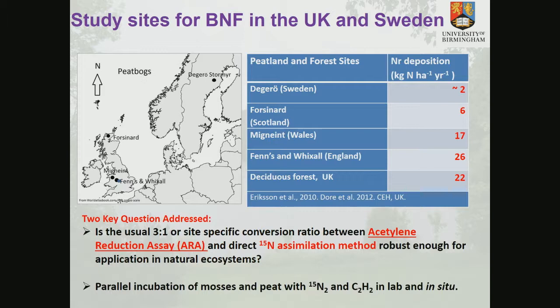For biological nitrogen fixation, we looked at the gradient of nitrogen depositions from Degaro in Sweden — the northern limits of PT systems with background atmospheric deposition — to higher deposition within the UK. The usual method, the acetylene reduction assay, has been used extensively, so we wanted to know if it's applicable across this diversity of sites. We conducted parallel incubations of 15N assimilations versus ARA to find a site-specific conversion ratio so we could do more measurements.